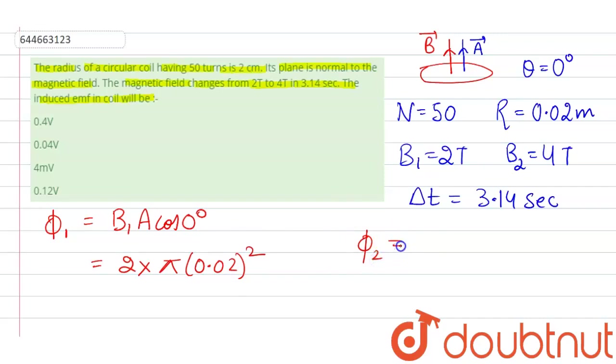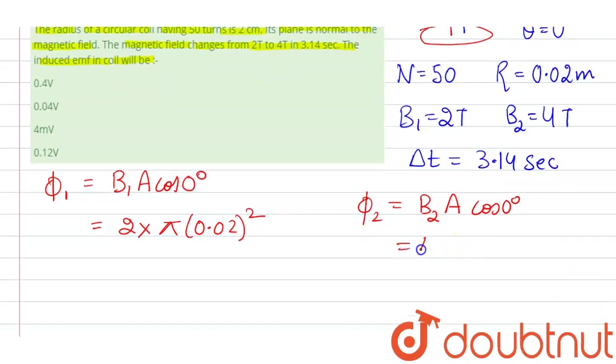Next we find out phi 2. Phi 2 will be equal to B2 A cos 0, putting B2 to be 4 here, area is pi 0.02 whole square.